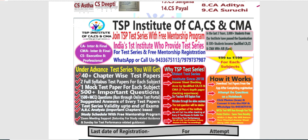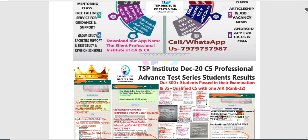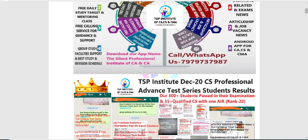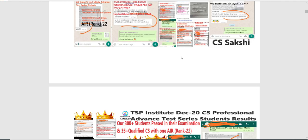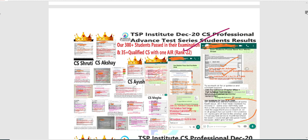TSP के test series में join होना चाहते हो तो second batch का registration last date 7 March है, 8 March से हमारा test series batch start हो जाएगा। इस बार एक student का rank भी आया है, 35 plus CS qualified हुए हैं और 300 plus students pass हुए। Result देखना है तो इसी PDF में सारे results दिख जाएंगे — पहले हमारे students की review देखो, उसके बाद ही test series join करो।